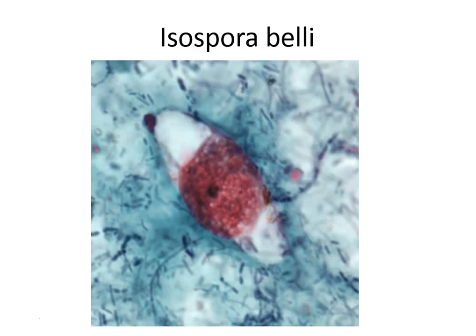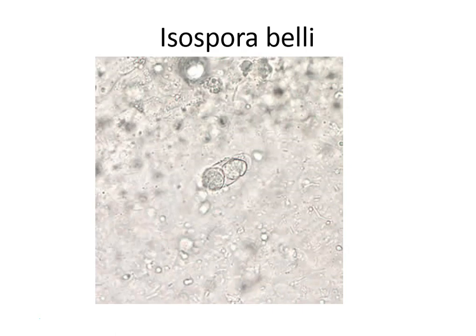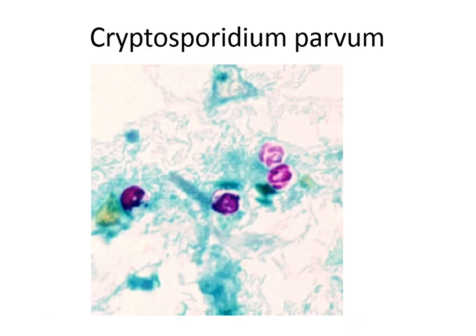Isospora has two sporoblasts that become a sporocyst, and the sporocyst has four sausage-shaped sporozoites in the center. It has a colorless two-layered cell wall. Associated findings include eosinophilia, Charcot-Leyden crystals, malabsorption, and increased fecal fat.